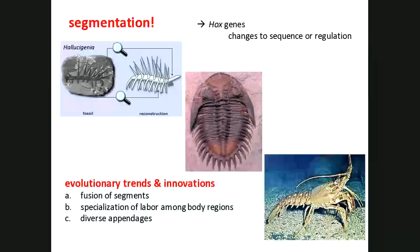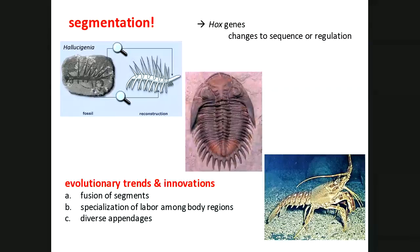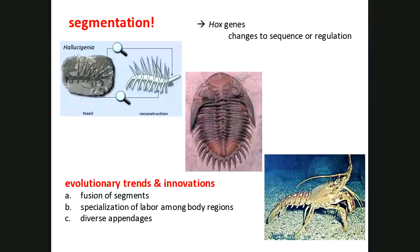Segmentation is due to the Hox genes that control the placement of appendages. If you duplicate or change the sequence of their regulation, you can not only repeat appendages over and over but also specialize them. In the Florida spiny lobster, the appendages include legs in the back, the tail, walking legs in the front, feeding appendages, and antennae — all modified appendages. So segmentation basically means animals learned to accessorize: sensory appendages in front, eating appendages, walking legs, pinching claws, swimming appendages. There's also a trend where segments begin to fuse into large segments.